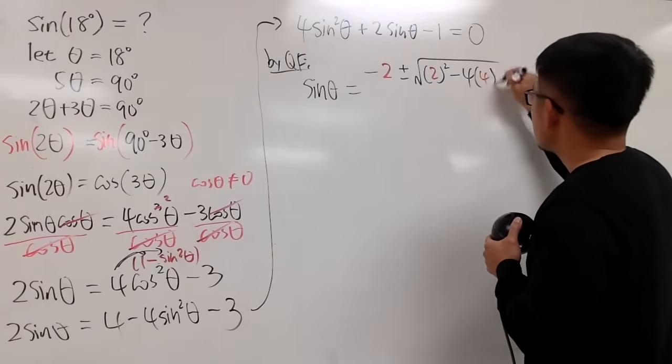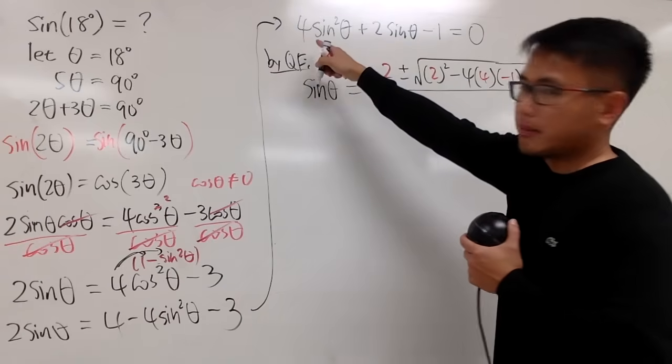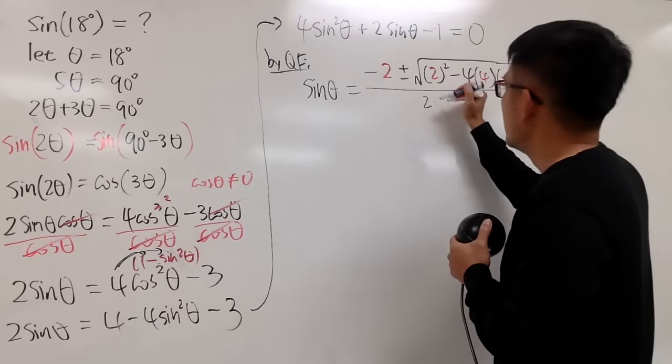Minus 4, it's always 4 from the quadratic formula, and then times a, which is that 4, and then times c, which is this negative 1. And then all over 2 times a, which is 2 times 4.